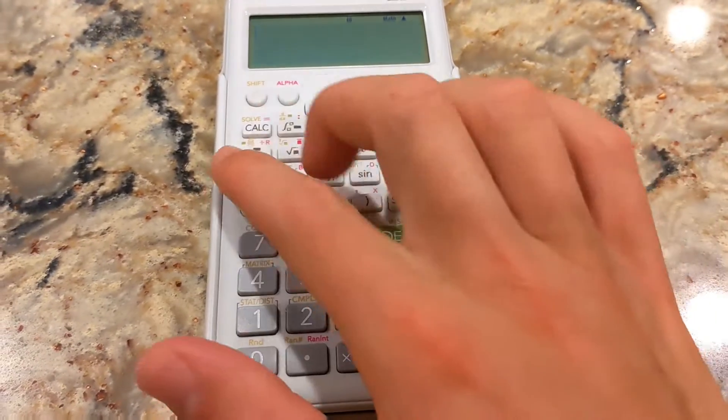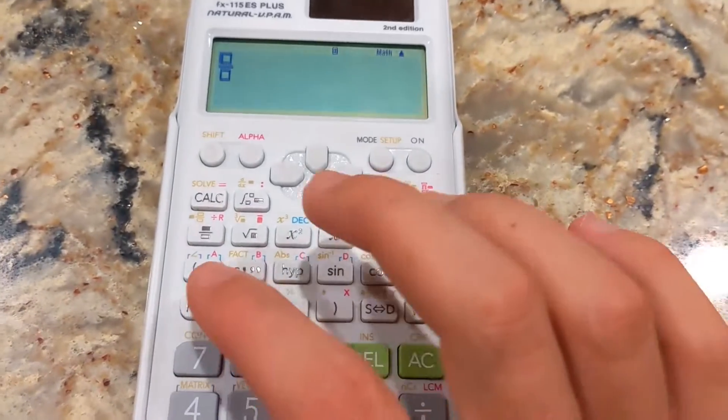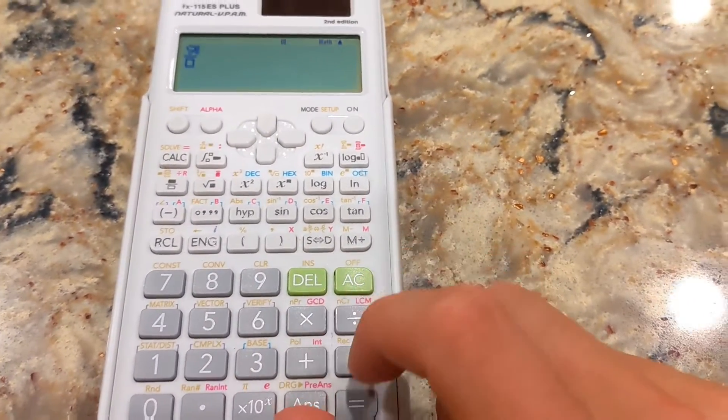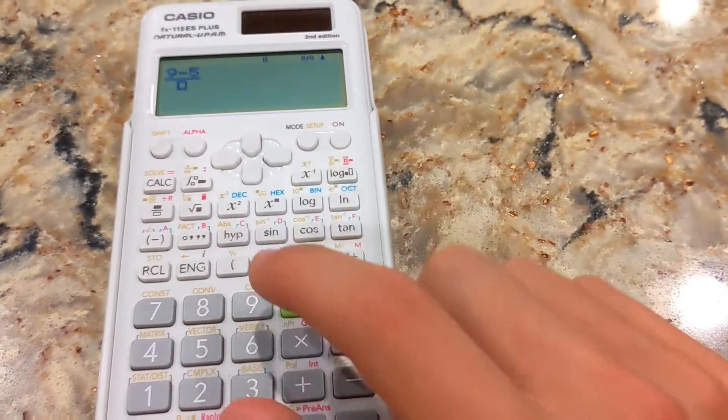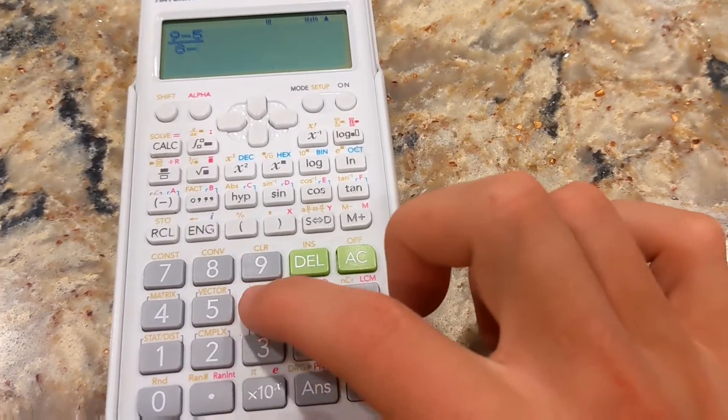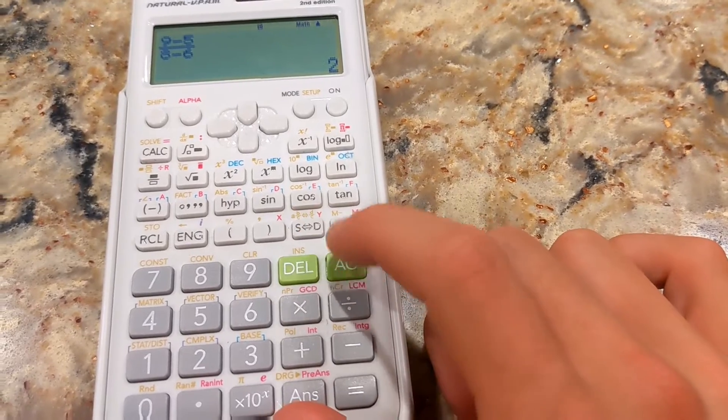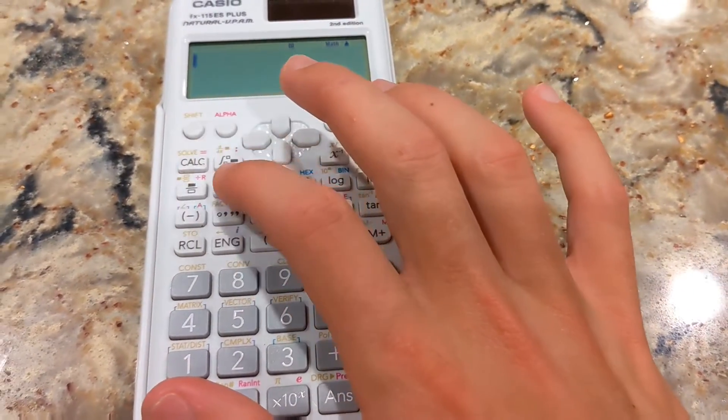Some other cool things that I can do with this are Solve for Slope. So I'll hit the Fraction key. And let's see. Y2 minus Y1. So maybe 9 minus 5 over X2 minus X1. 8 minus 6. And my slope would be 2. How cool is that? And that's literally just a fraction key.